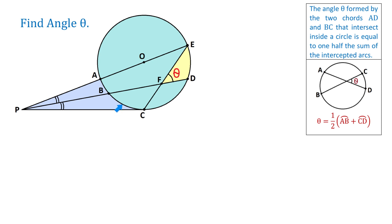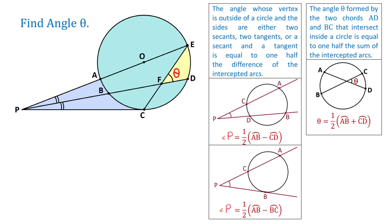But how can we find the measures of these arcs? For this, we need to look at another principle. In both these figures, we have angles whose vertex is outside of the circle. In one figure, the two sides of the angle are secants, and in the other, one side is a secant and the other is a tangent. The intercepted arcs are AB and CD in the first case, and AB and CB in the second. In both cases, to find angle P, we need to subtract these arcs and divide the result by two. So angle P equals one-half the difference of arc AB and arc CD, and in the other case, one-half the difference of arc AB and BC.